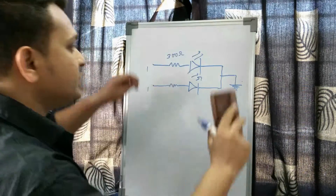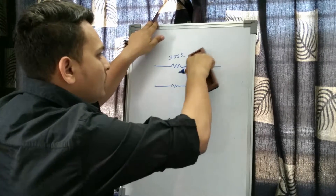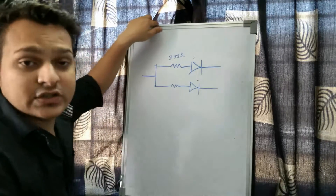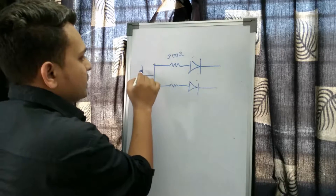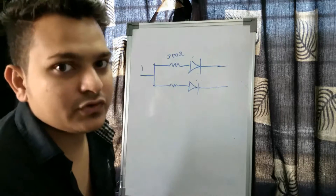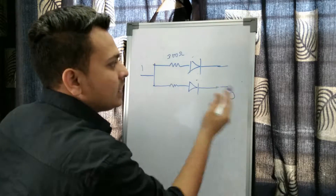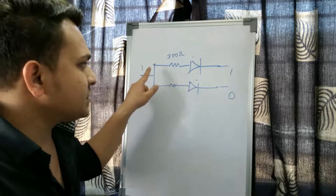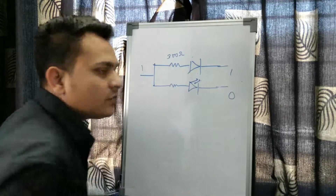If you want to work with common anode, you short the anodes together after the resistance part and continuously supply logic one — five volts. Then you decide which LED to glow by applying ground (zero logic) to the cathode of that LED. The other LED gets logic one on its cathode, so its circuit is not completed and it stays off. Only the LED with ground on the cathode will glow.